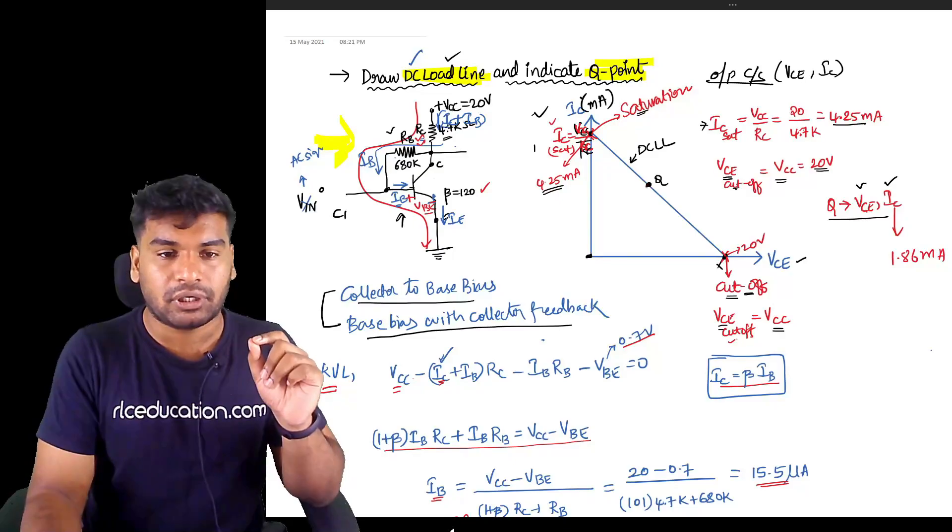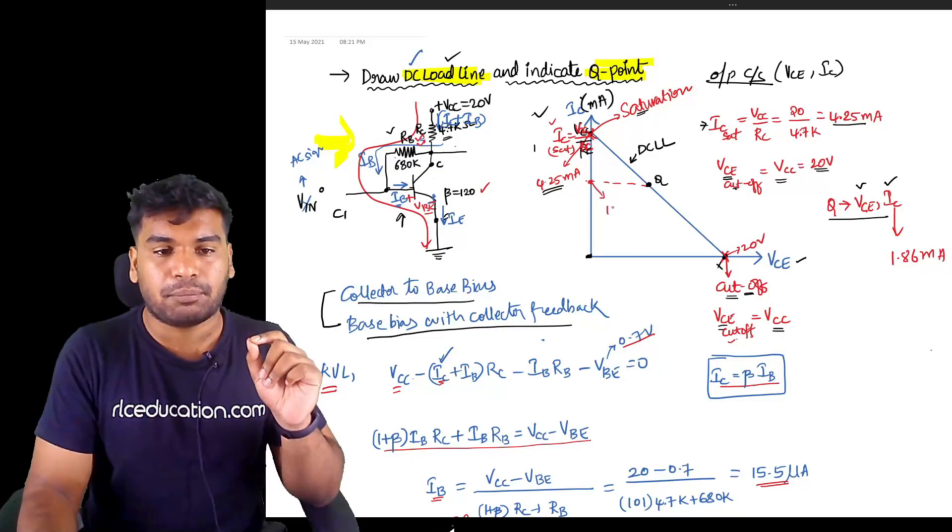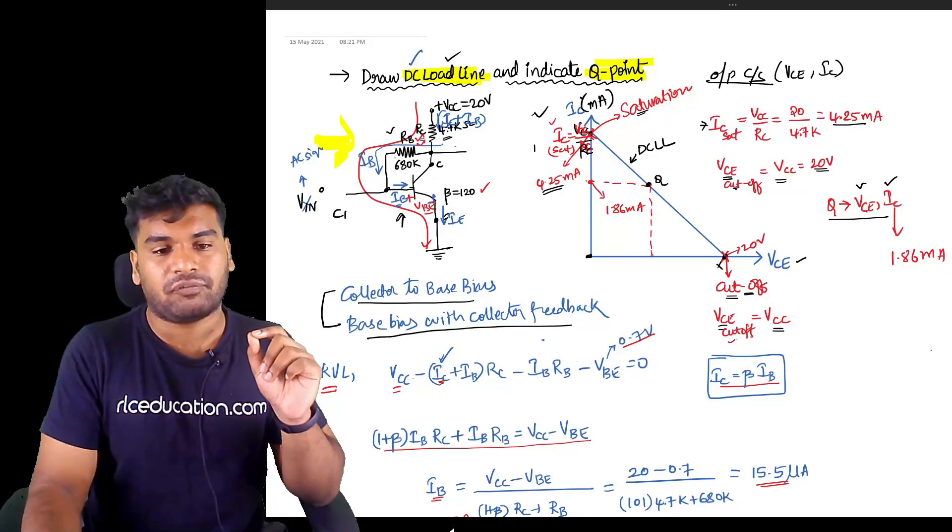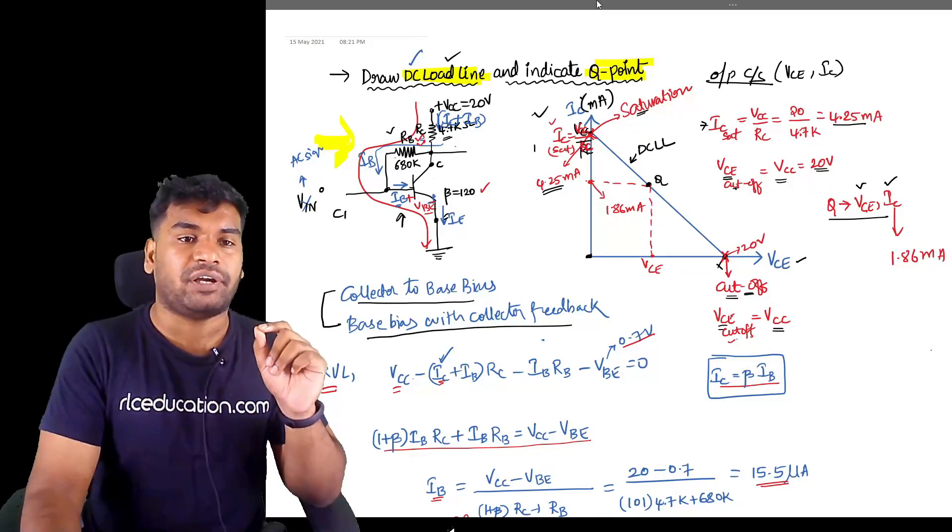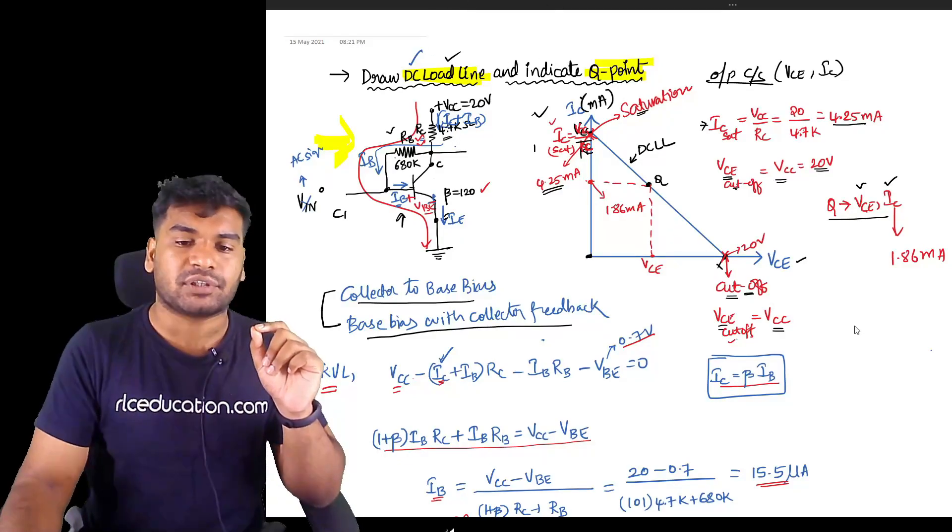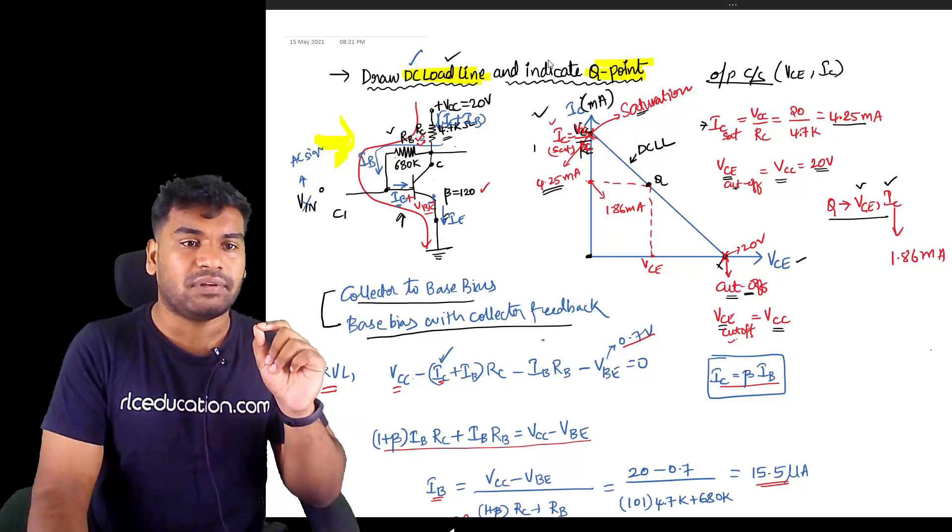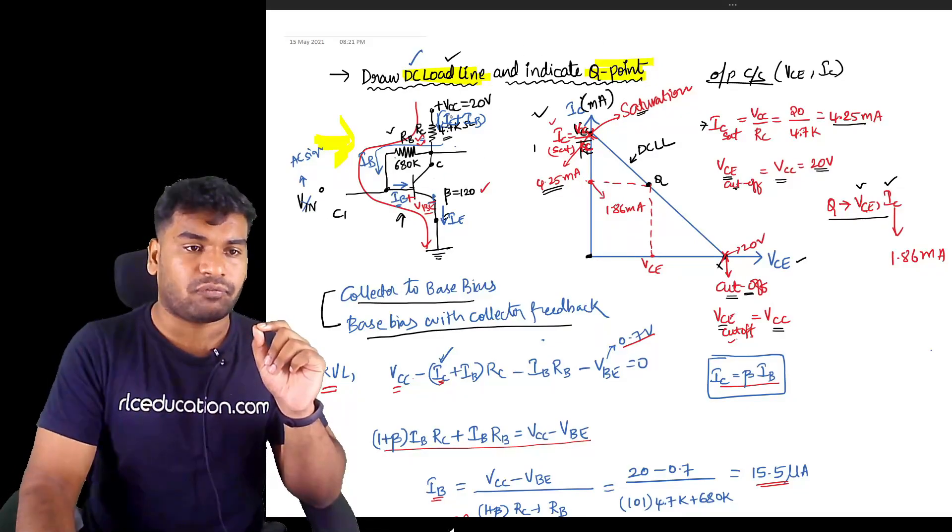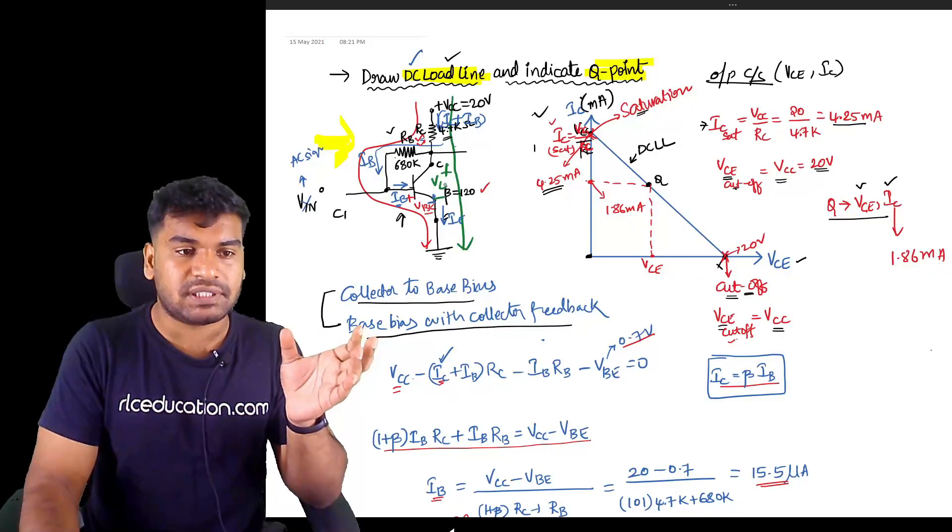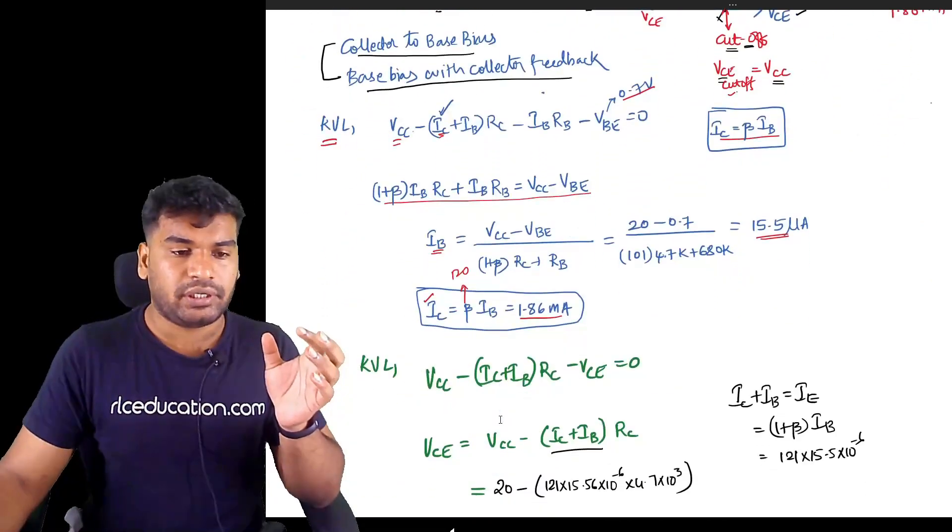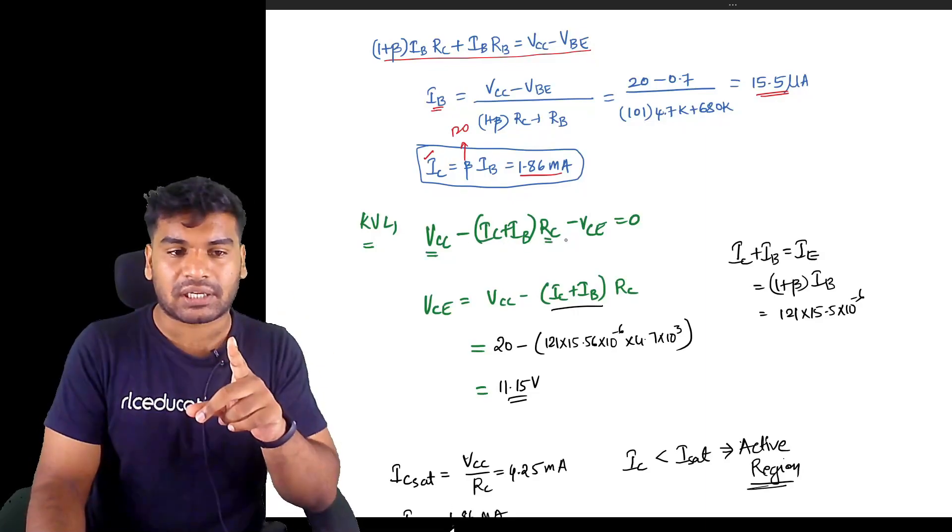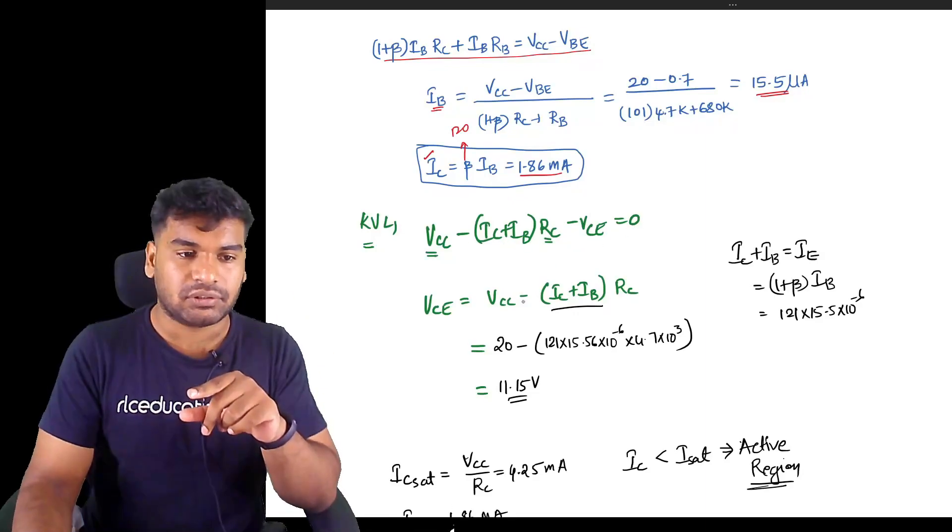So this particular Q-point, its value is 1.86 milliamperes. I need to find out the value of corresponding VCE here. To find out the value of VCE, what I will do is take another KVL equation on the output side. Where will be that output side KVL? From here I will take another KVL, and this particular voltage here is VCE.